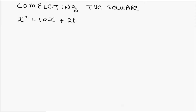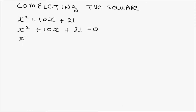First, we set this equal to zero and then complete the square. So we write it out as x squared plus 10x plus 21 equals zero. We want to get rid of the constant term and put it on the right-hand side, giving us x squared plus 10x equals minus 21.